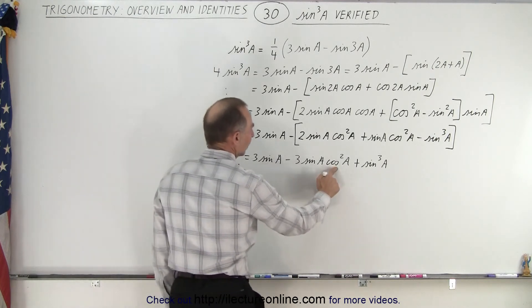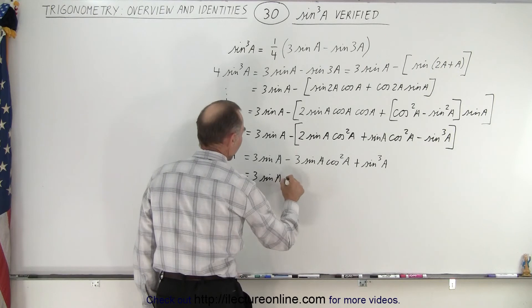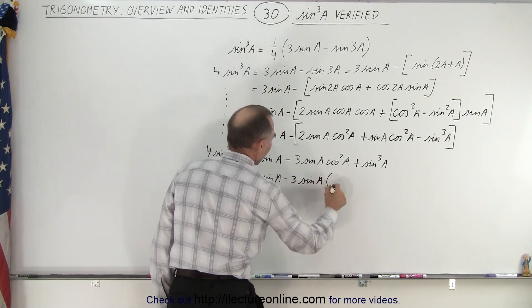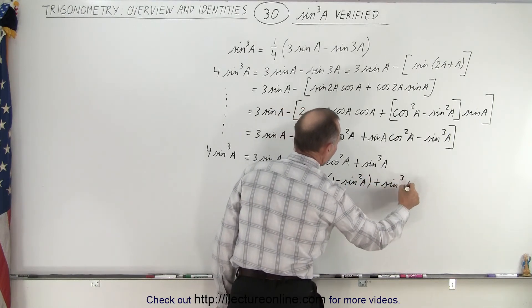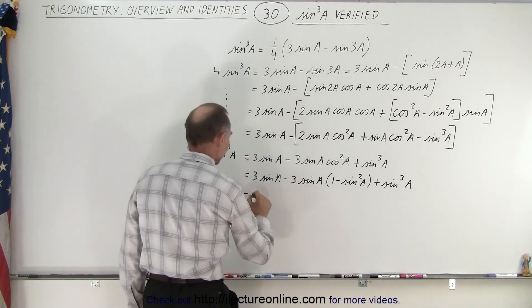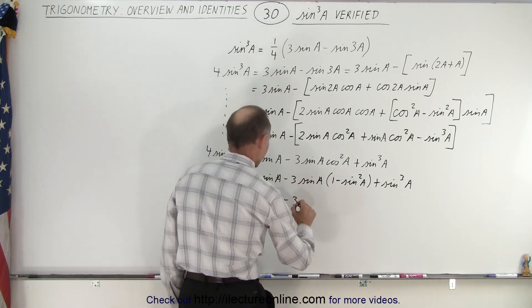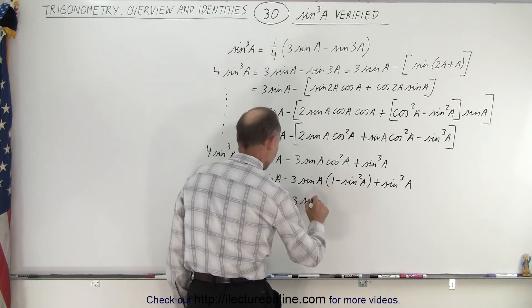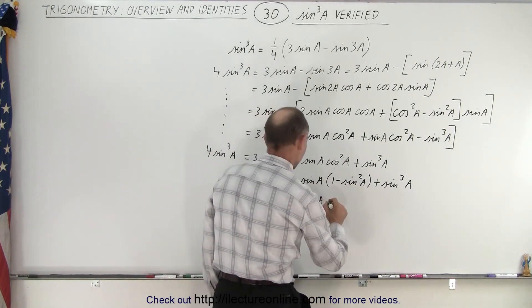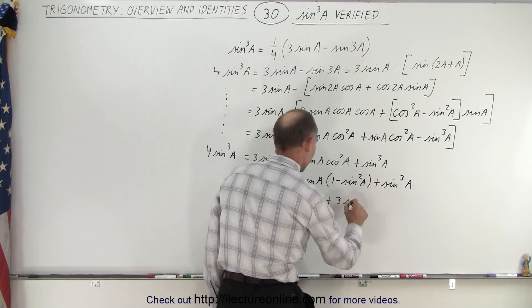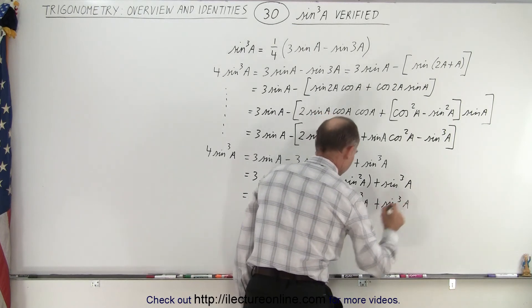Now we're going to write cos²A in terms of 1 minus sin²A. So this is equal to 3 sinA minus 3 sinA times (1 minus sin²A) plus sin³A. Working that out: 3 sinA minus 3 sinA — so these cancel — and then 3 sinA times sin²A gives us plus 3 sin³A, plus sin³A.